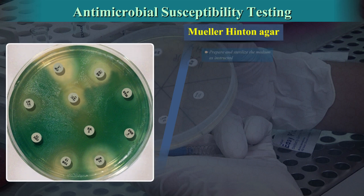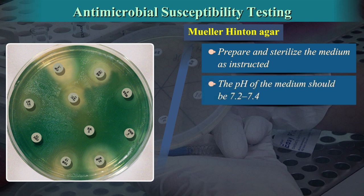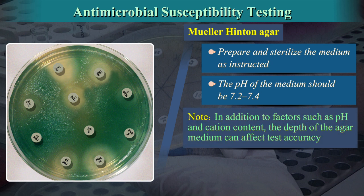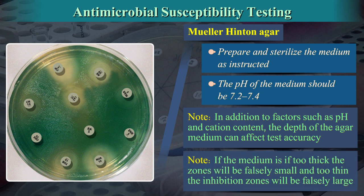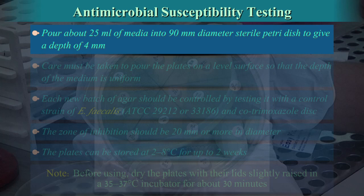Mueller-Hinton agar: Prepare and sterilize the medium as instructed by the manufacturer. The pH of the medium should be 7.2 to 7.4. In addition to factors such as pH and cation content, the depth of the agar medium can affect test accuracy and must be carefully controlled. If the agar is too thick, the inhibition zones are smaller; if it is thin, the zones are larger. Pour about 25 ml of media into a 90 mm diameter sterile Petri dish to give a depth of 4 mm.